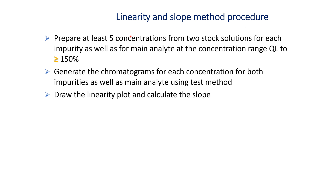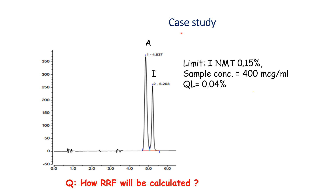Linearity and slope method procedure: prepare at least five concentrations from two stock solutions for each impurity as well as for the main analyte. The concentration range should be from the quantitation limit to at least 150% of the limit of the impurity. Generate the chromatogram for each concentration for both impurities and the main analyte using the test method. Then draw the linearity plot and calculate the slope. Case study: consider an API in which the limit of impurity I is not more than 0.15%, QL of the method is 0.04%, and sample operating concentration is 400 µg/mL.